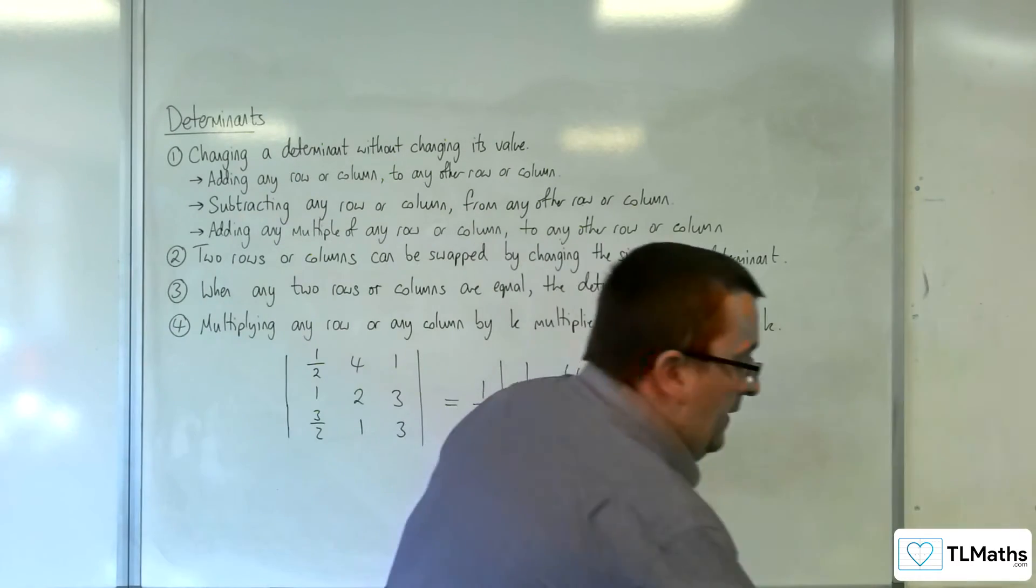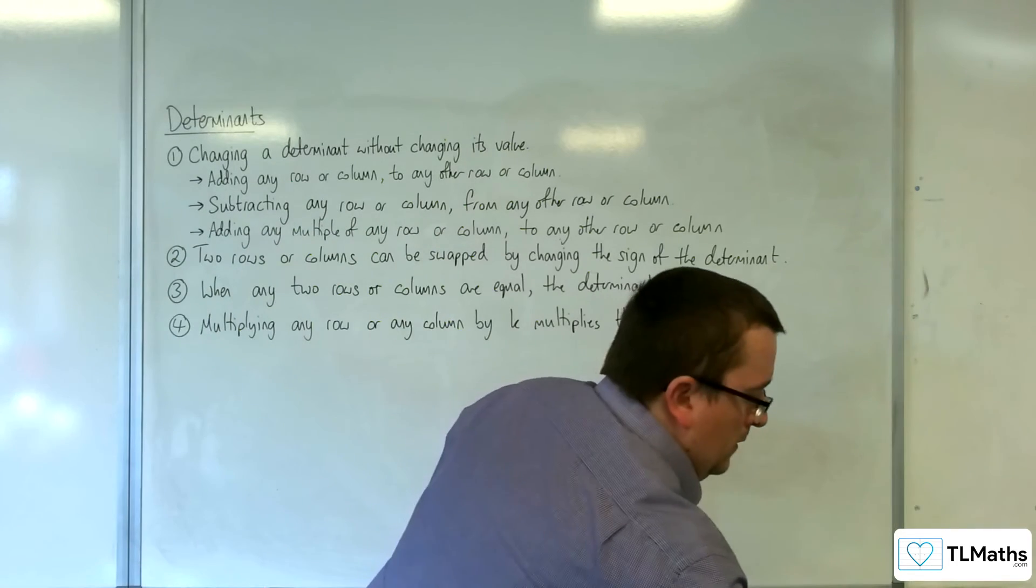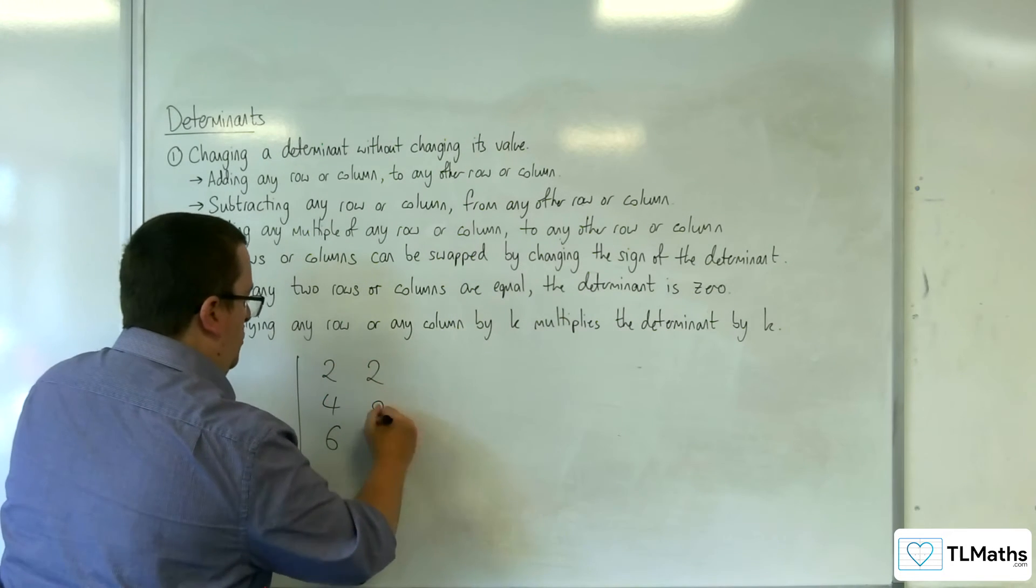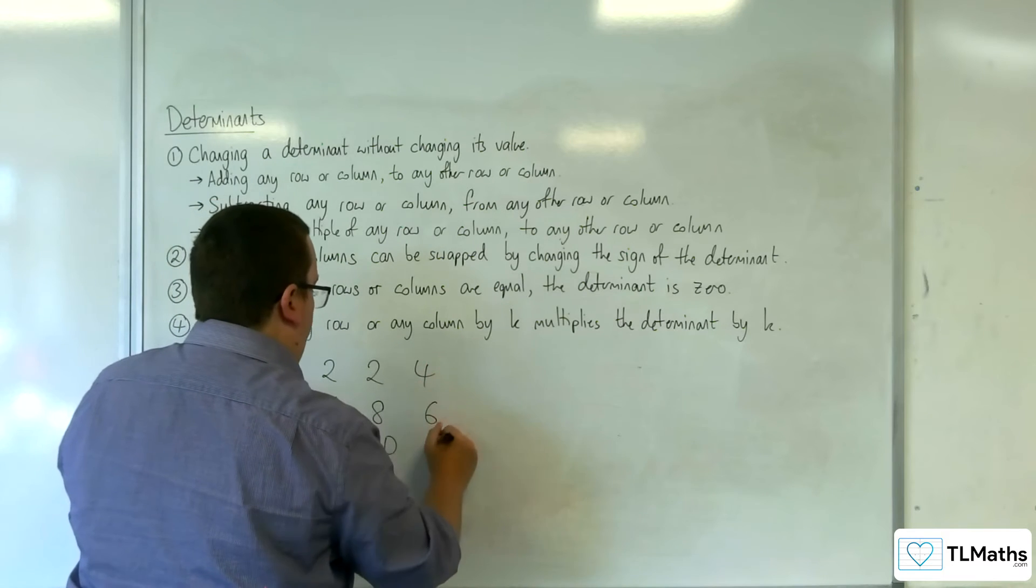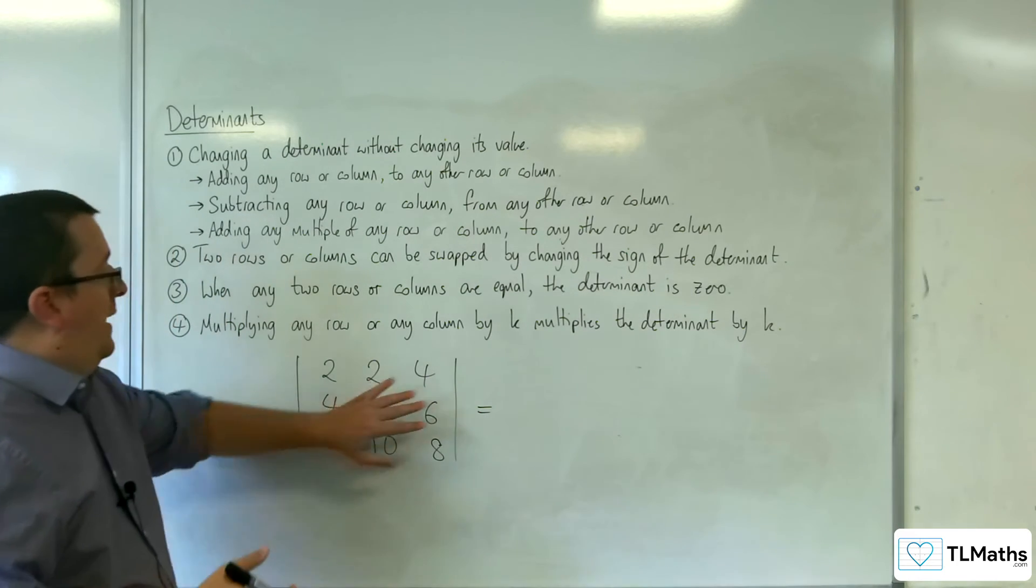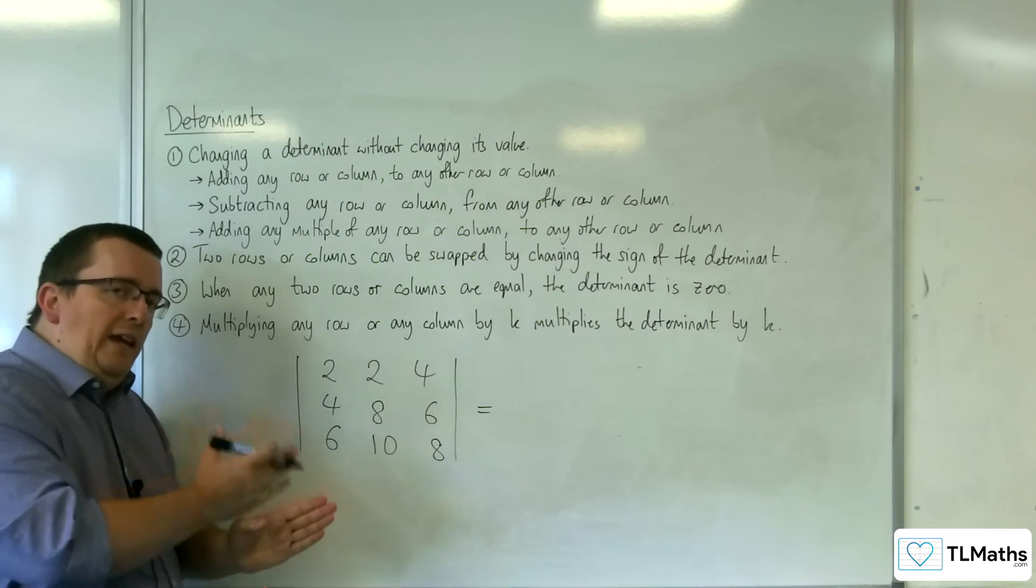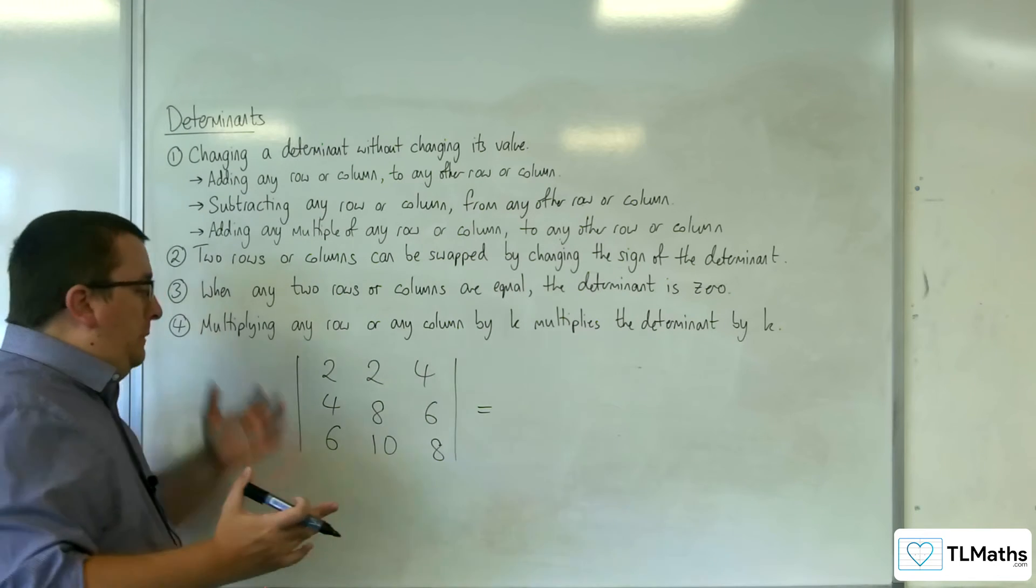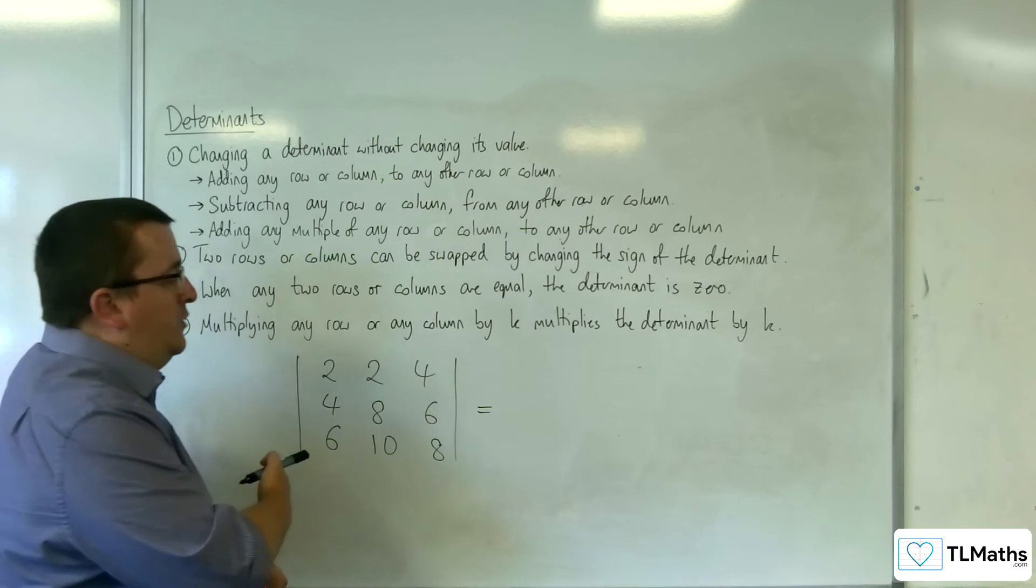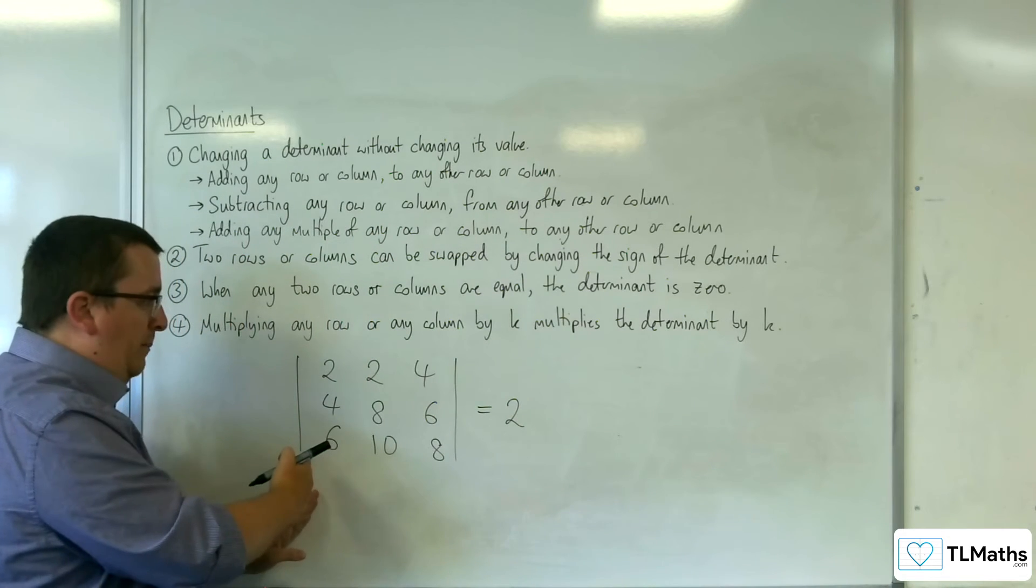Now, another example of that, so let's say you had 2, 4, 6, 2, 8, 10, 4, 6, 8, and you looked at that and went, right, all of the values are even so I could factor out 2. Now, if you do that, you'd be doing that for each of the rows or each of the columns. So, in actual fact, if you want to factor 2 out of the whole thing, you've got to factor out 2 cubed. So you would be factoring out the 2 from the first column, for example, so that would get you 1, 2, 3.